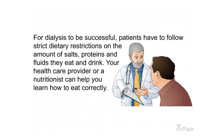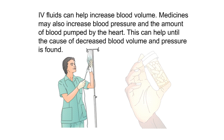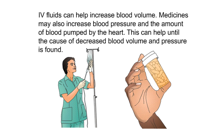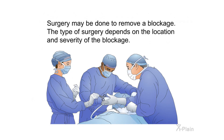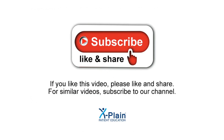For dialysis to be successful, patients must follow strict dietary restrictions on the amount of salts, proteins, and fluids they consume. A health care provider or nutritionist can help with proper diet guidance. IV fluids can help increase blood volume, and medicines may increase blood pressure and the amount of blood pumped by the heart. Surgery may be done to remove a blockage, depending on its location and severity. A kidney transplant can cure some kidney diseases that cause azotemia, but there are not enough kidneys available for all patients on dialysis, and it may take years on a waiting list.